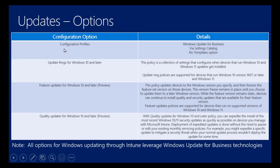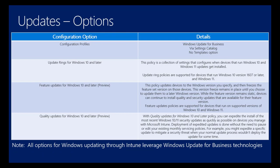The first option is to use configuration profiles to define and deploy your settings for how updates run. Windows Update for Business is available as a configuration profile under the Settings Catalog - not the Templates option. Another pathway is Update Rings for Windows 10 and later. This policy is basically a collection of settings that allows you to configure when devices running Windows 10 and 11 get updates installed, and also the user experience when those updates get installed.